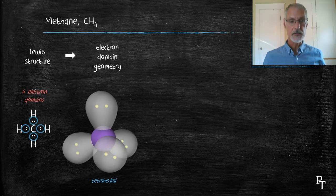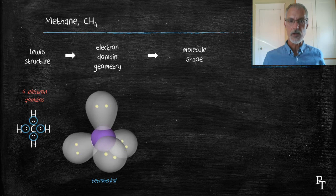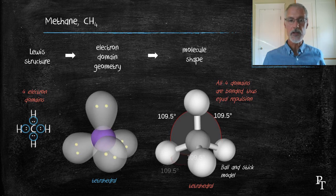In this particular case, to determine the shape of the molecule, every single one of those domains is bonded to a hydrogen. As a result, the shape of my molecule is also a tetrahedral. In a tetrahedral, my bond angles will be equal at 109 degrees because all of the pairs are bonded and all repel equally.